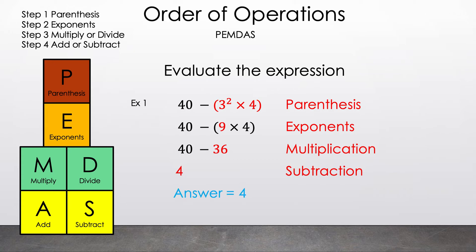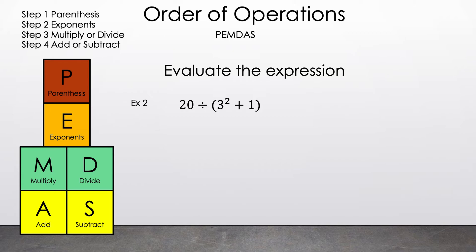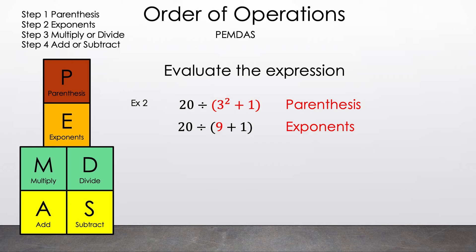Now let's move on to example two. Evaluate the expression 20 divided by the parentheses of 3 squared plus 1. We see parentheses, so let's highlight that. We have to decide between the square and the addition. Since square is a type of exponent, we do that first. 3 squared is 9. Now we have 20 divided by the parentheses of 9 plus 1. We still have parentheses, so let's do the operation inside first. 9 plus 1 is 10. Now we have 20 divided by 10, and the result is 2. That is our answer for example two.